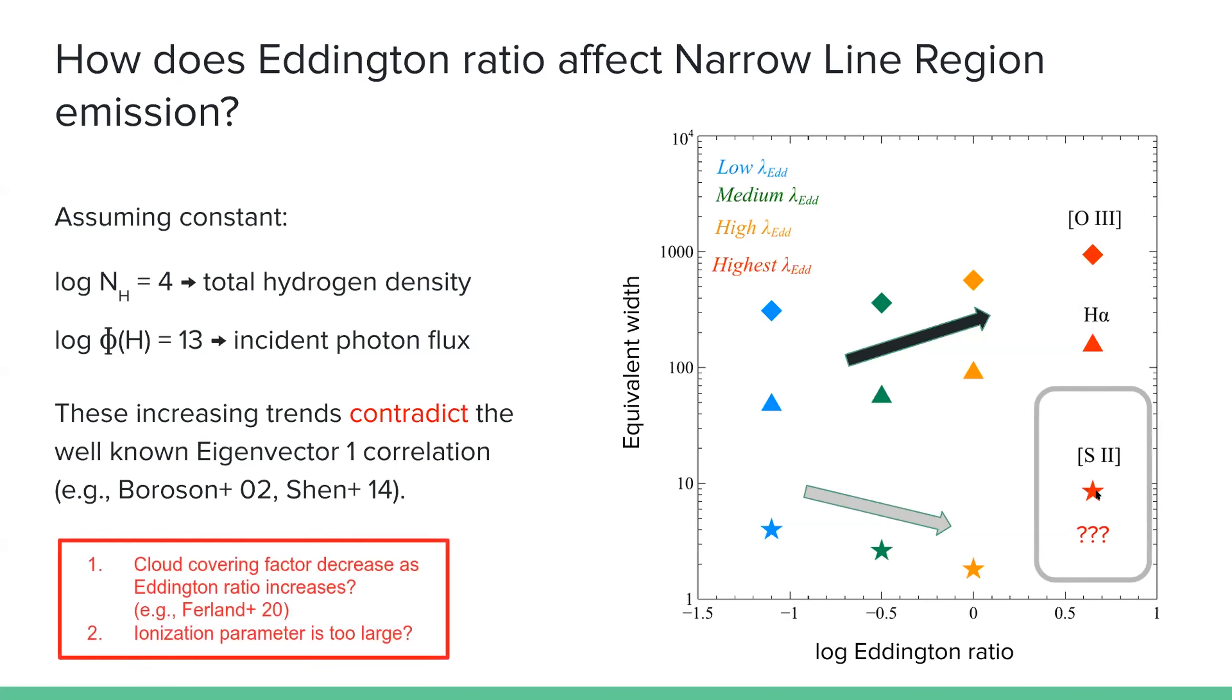So we have two possible explanations for this phenomenon because we only use the simple model. Probably the cloud-covering factor of the gas decreases as the Eddington ratio increases. This is what we don't model currently.